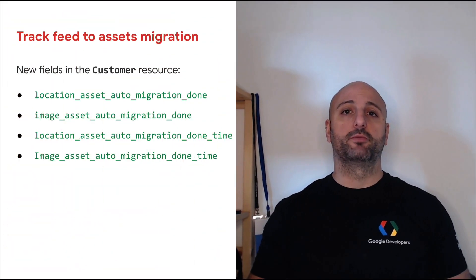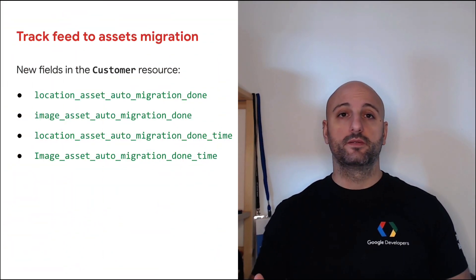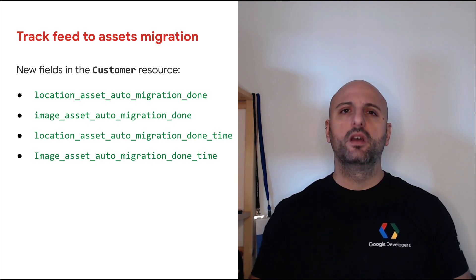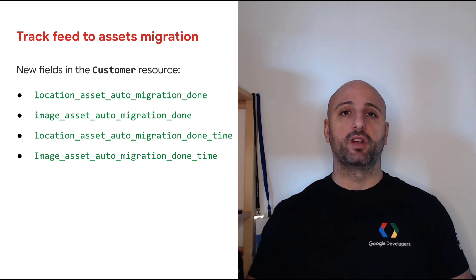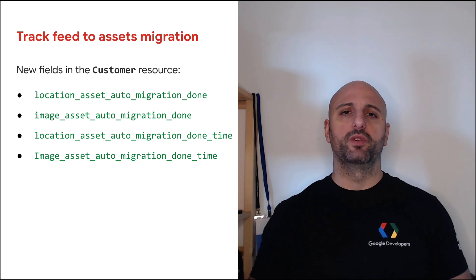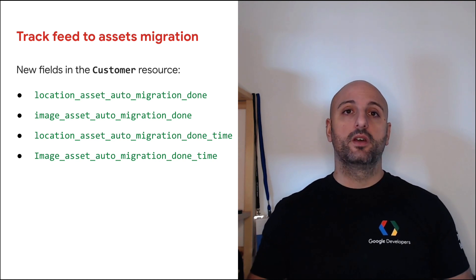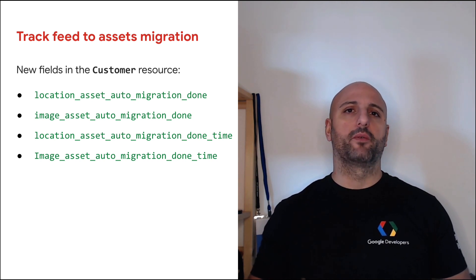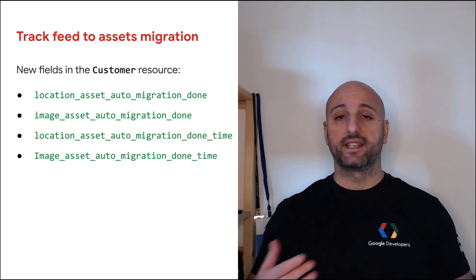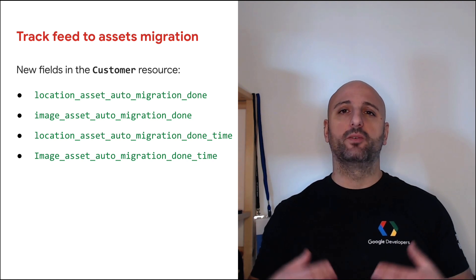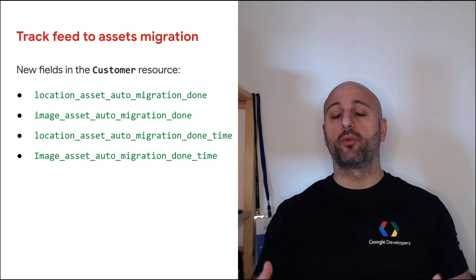If some of your customer accounts are having their location and image feeds automatically migrated to assets, you now have the ability to track the status of these migrations thanks to new fields added to the customer resource. These will allow you to know not only whether an account has been migrated from location and image feeds to their asset equivalents, but also exactly when the migrations happened.